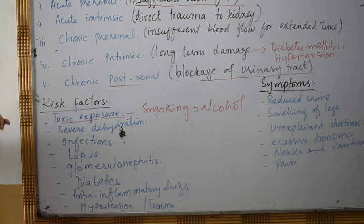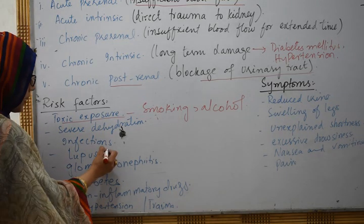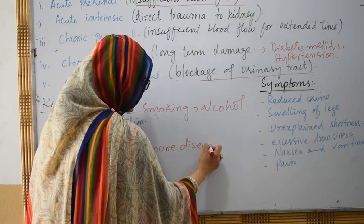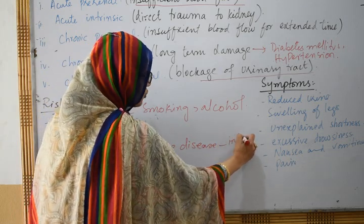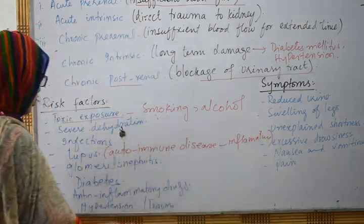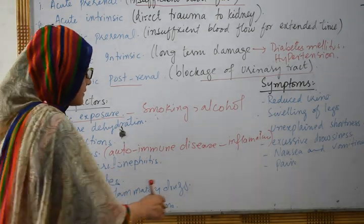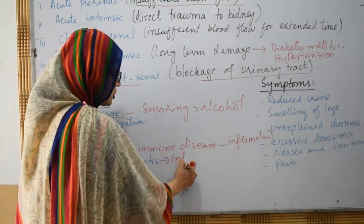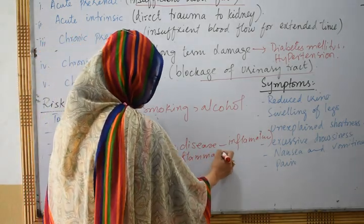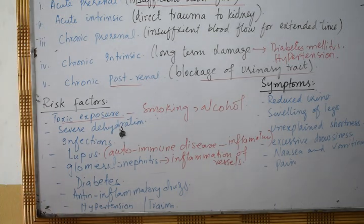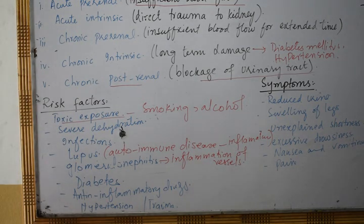Infections are a risk factor — usually UTI infections can cause kidney failure. Lupus is an autoimmune disorder; the inflammation caused by lupus, if it affects the kidney, can also cause renal failure. Glomerulonephritis means inflammation of the glomerular vessels — when those vessels become inflamed, filtration is impaired, the kidney is damaged, and the rate of filtration decreases, leading to kidney failure.